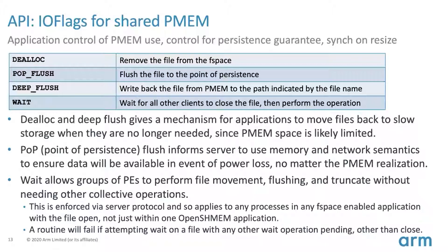There is also a wait operation for consumer-producer semantics between full applications. If multiple applications are connected to the same file space but don't see each other's PEs — so they can't do barriers or synchronization directly — they can use a wait flag. A producer application can close a file and wait for all consumers to close it; a consumer application can wait until everything is closed and then pull the data out. This is enforced on the server side entirely within the UCX server protocols, not in the OpenSHMEM implementation.